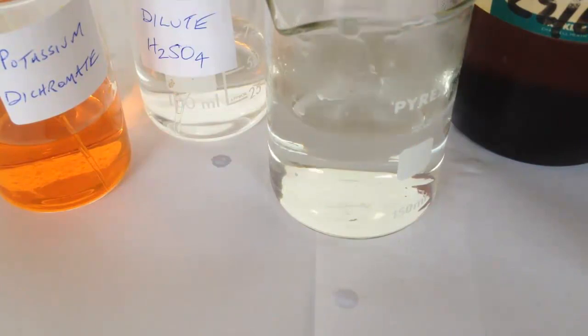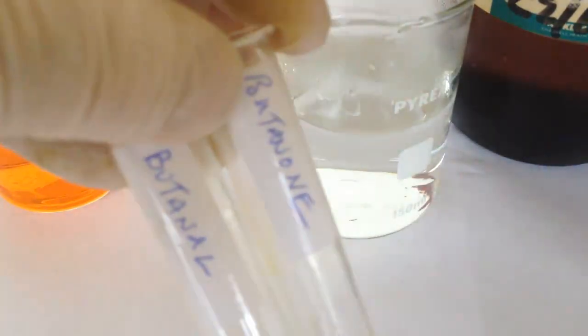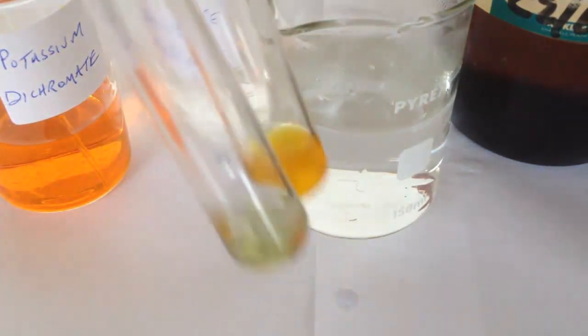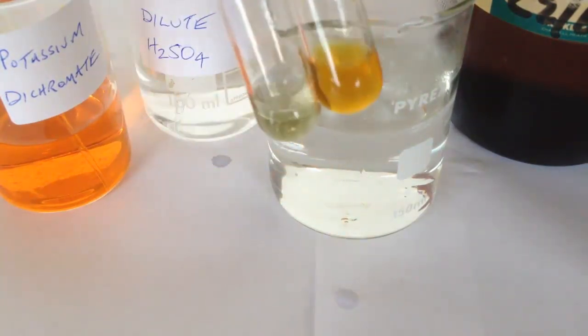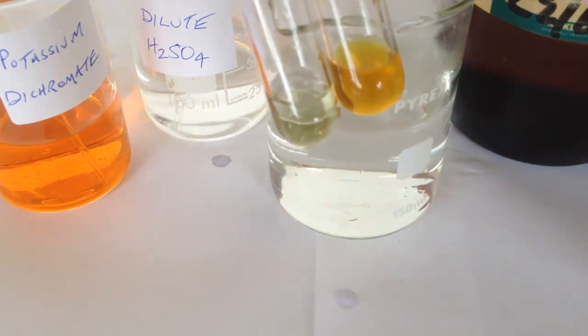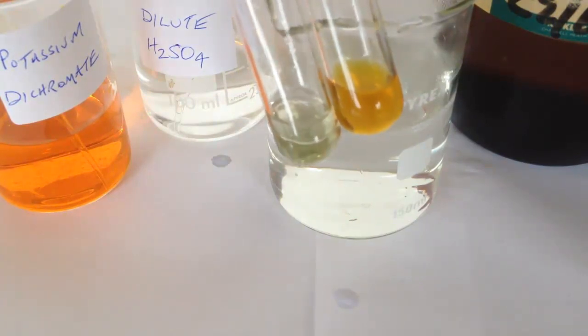On the left was the test tube containing the butanal. It's gone from orange to green, while the orange colour has persisted in the test tube on the right, which contained the ketone butanone.